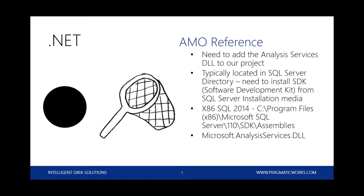The first thing we do when we want to get going with AMO is add the Analysis Services DLL to our project. That's typically located in your SQL Server directory — you need to install the SDK when installing SQL Server, or you can revisit and install later with the installation media. For example, your x86 SQL 2014 path will be: C:\Program Files (x86)\Microsoft SQL Server\110\SDK\Assemblies, and the DLL is named Microsoft.AnalysisServices.dll.